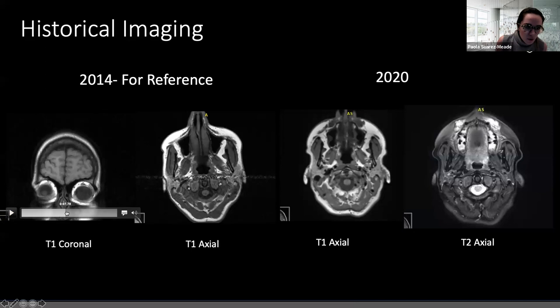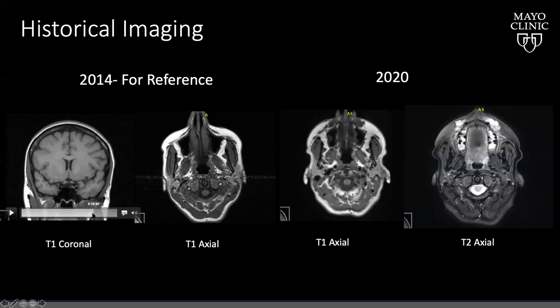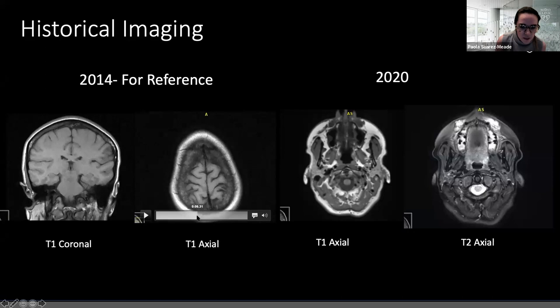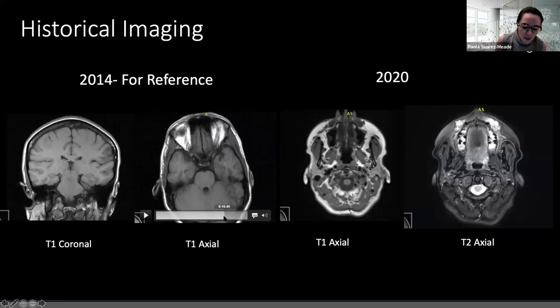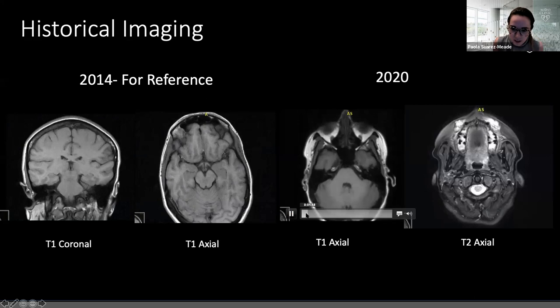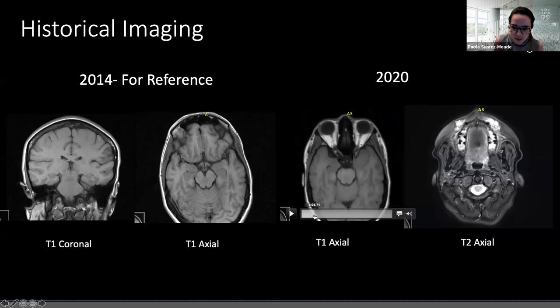These are the images from 2014 when she was first diagnosed with multiple sclerosis. You can see in the T1 — it's not very evident — but she had some demyelinating lesions. Otherwise, the MRI was normal.